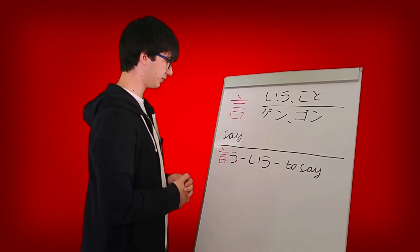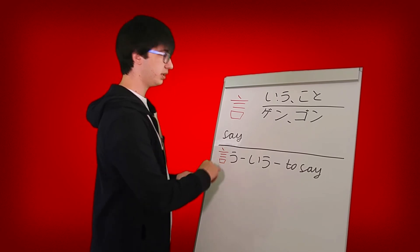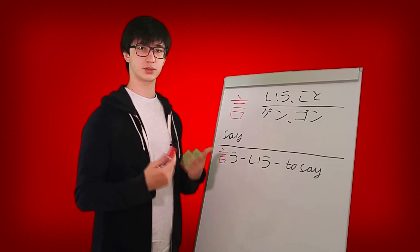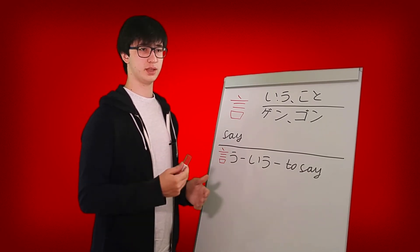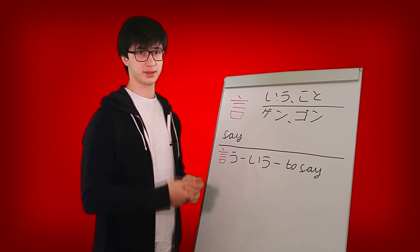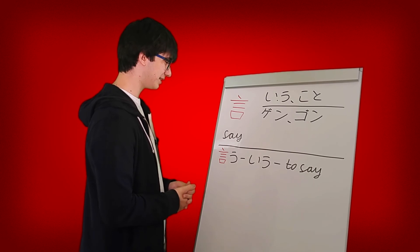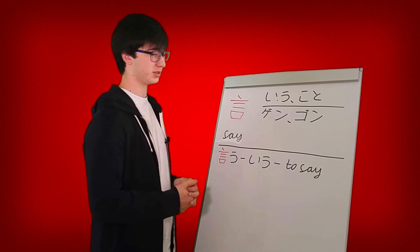I don't think this should be too difficult. We just change the U to E and then add nasai. And if it is a group two verb or a RU verb then you would just drop the final RU and add nasai. So taberu tabenasai. I'm not supposed to be teaching you grammar but this is a short episode so I figured I'd just explain it.